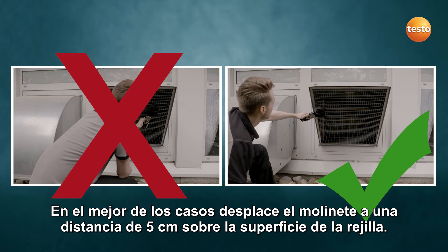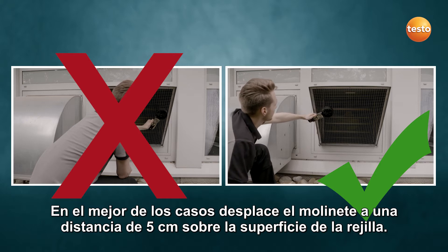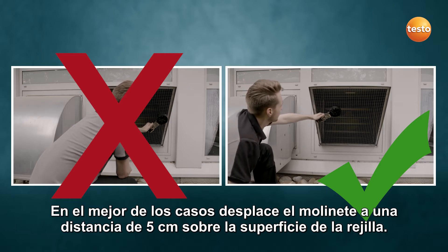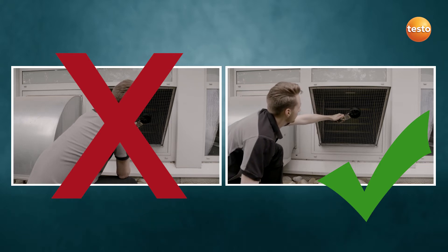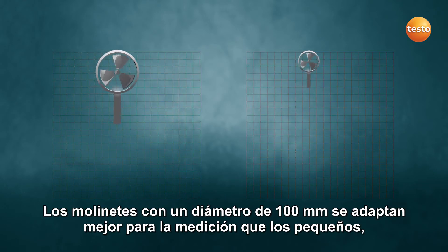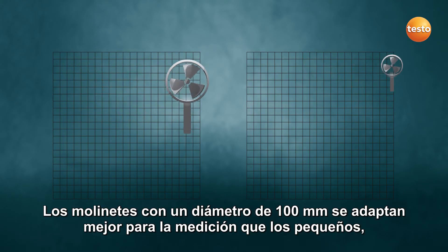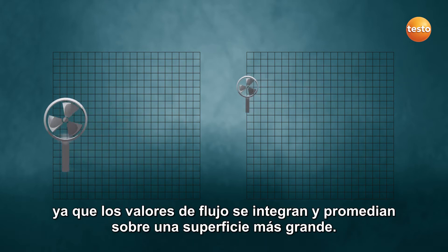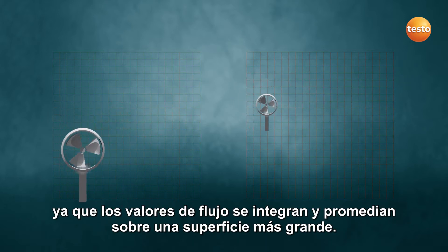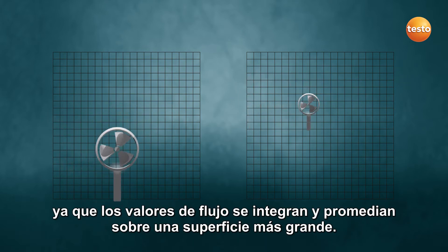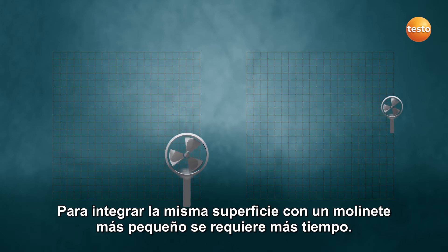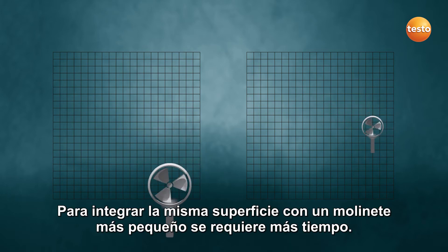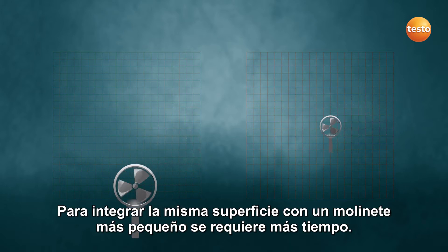The best method is to move the vane across the grill surface at a distance of 5 cm. Vanes with 100 mm diameter are better suited to measuring than instruments with smaller vanes, as the flow values are integrated and averaged over a larger area. Integrating the same area with the smaller vane takes significantly longer.